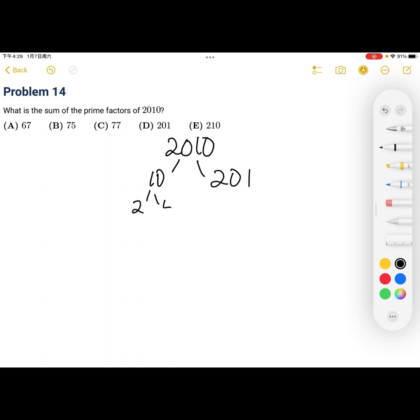10, you can keep on going with two and five. Two plus zero plus one is three. So this is divisible by three. Three and 67, yes. And then 67 is prime.